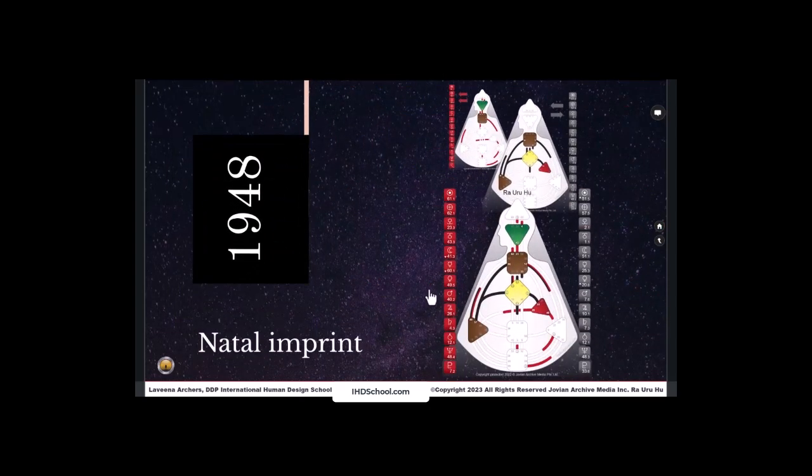And then here is the conscious personality natal imprint added onto that form imprint. So the personality imprint, the design imprint, merging to give us a holistic view of a being's type, strategy, and authority. In addition to all the nuances and subtleties that may become a strength, something reliable and dependable, something that is fixed. Remember that the definition, these channels that are strengths in the design, are the only things that are reliable and trustworthy. That's why we use that imprint to create the decision-making process, the guidance that we give in the foundation analysis.